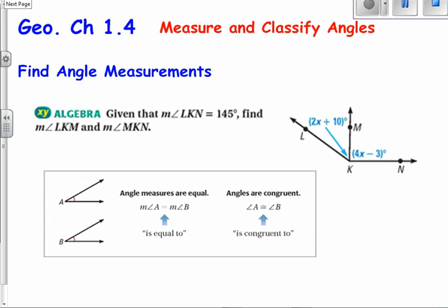Find an angle measurement, so let's do one. Given that the measure of angle LKN, so that's LKN, that whole angle is 145 degrees. Find LKM and MKN. Let's use a different color, let's use red for LKM, and you need to find MKN.